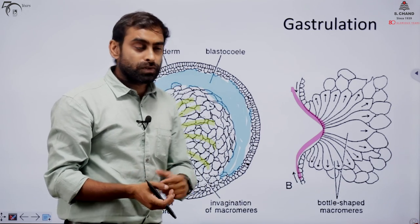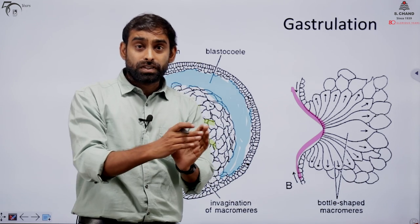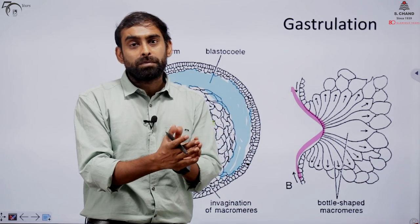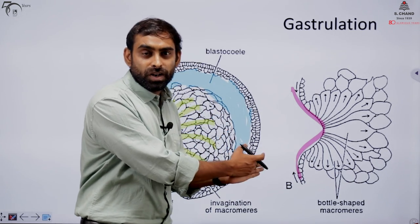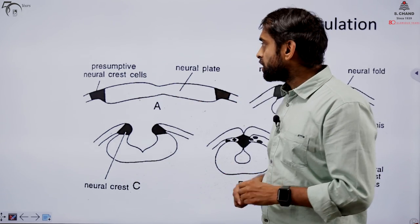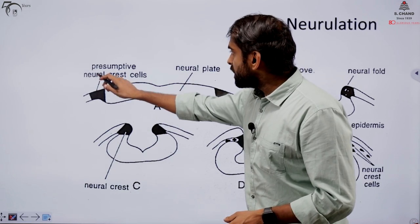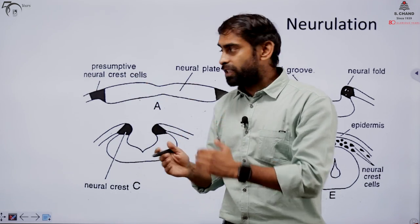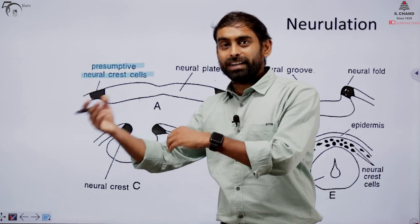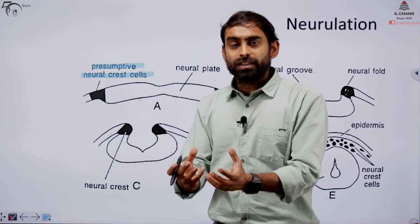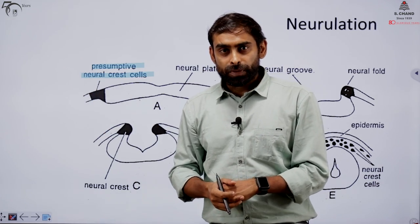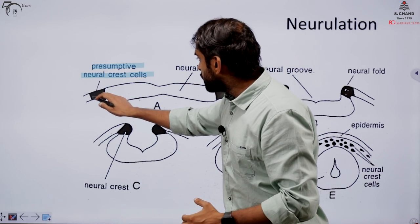Just after gastrulation, a very important structure forms — the nervous system. Neurulation is an independent process. When the initial part of the nervous system begins to form, that stage is called the neurula stage. Initially, there are presumptive neural crest cells — after gastrulation, certain areas contain cells that become presumptive neural crest cells. How it is decided which cell becomes a neural crest cell or a kidney cell will be discussed in coming videos through molecular signals and morphogens.